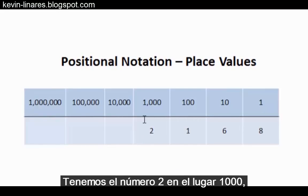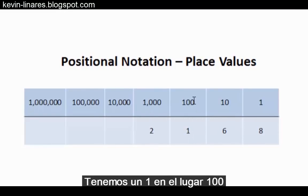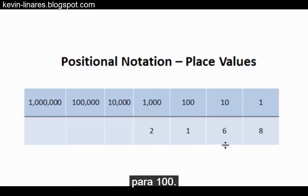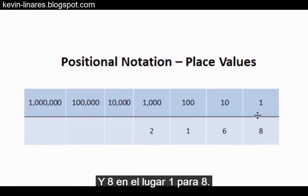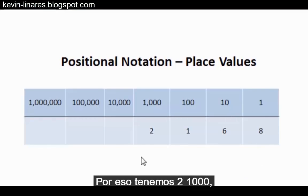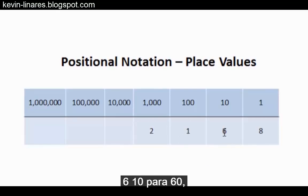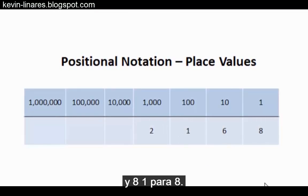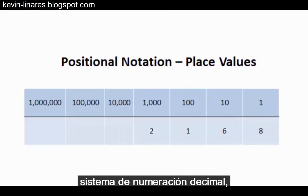You can see that we have the number 2 in the one-thousands place, so we have two one-thousands, we have a 1 in the hundreds place for 100, we have 6 in the tens place for 60, and we have 8 in the ones place for 8. So effectively we have two one-thousands, one 100, six tens for 60, and eight ones for 8.